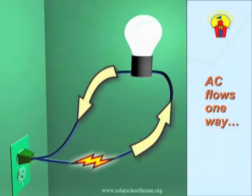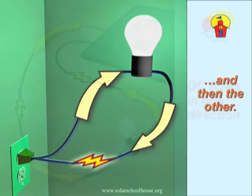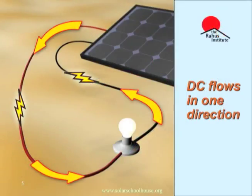AC electricity flows in one direction through the wires, and then changes direction and flows the other way. AC electricity changes direction 60 times every second. DC electricity always flows in only one direction, from the source of the electricity through the device being powered, and then back to the source.